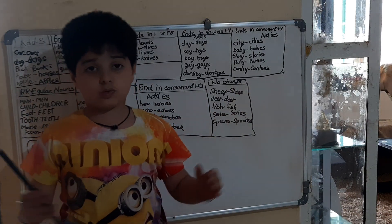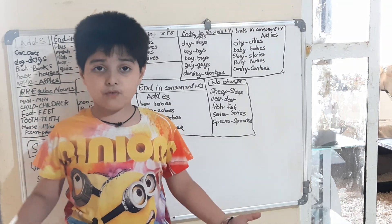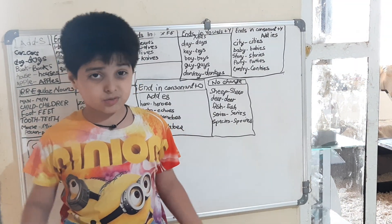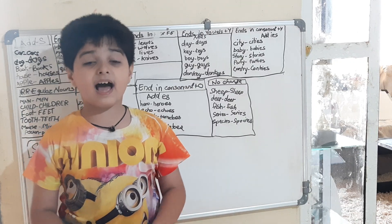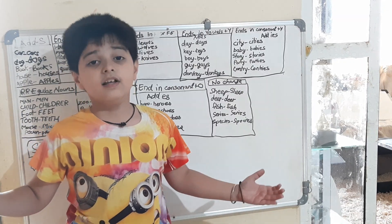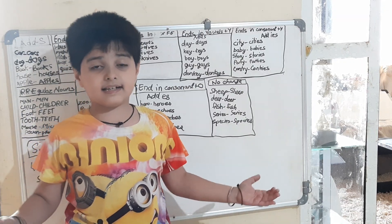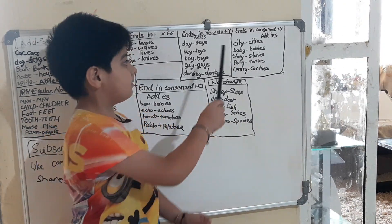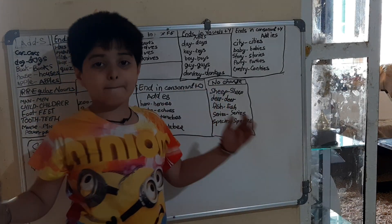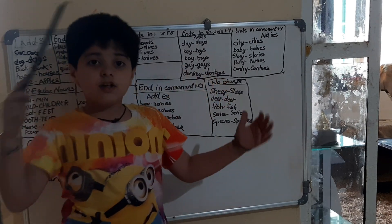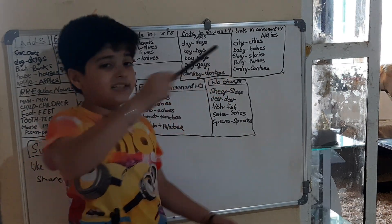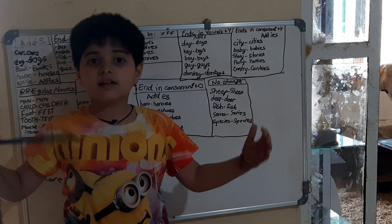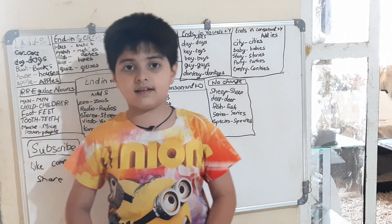Ending in consonant plus Y — before Y it should be a consonant — and then we will add IES. Let's take an example: city becomes cities, baby becomes babies, story becomes stories, party becomes parties, country becomes countries. Same like this.